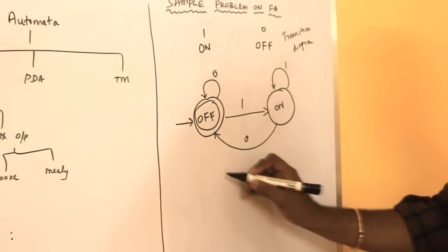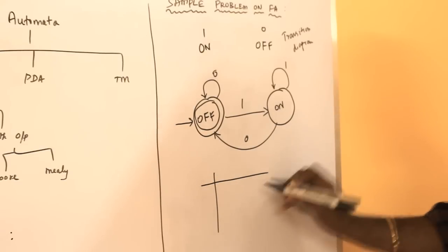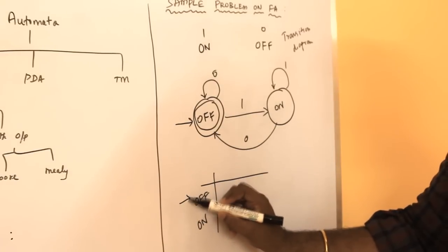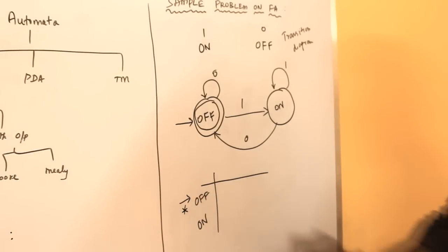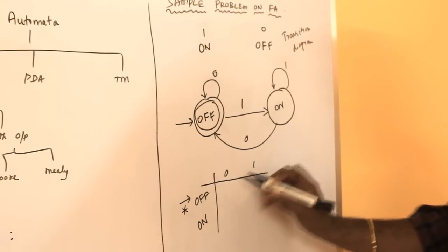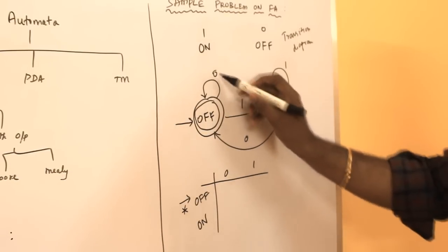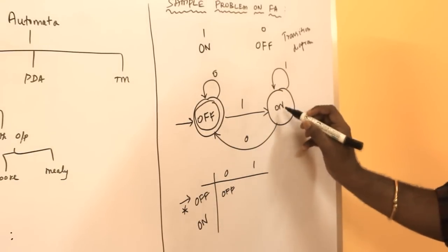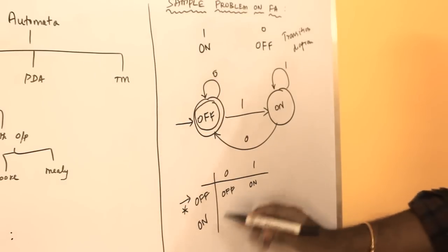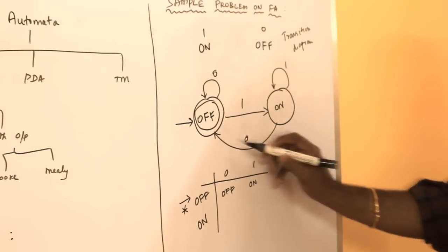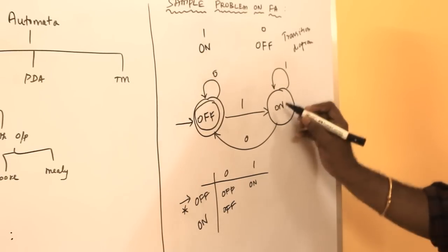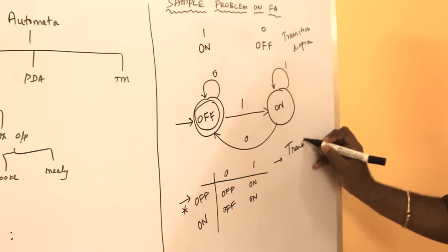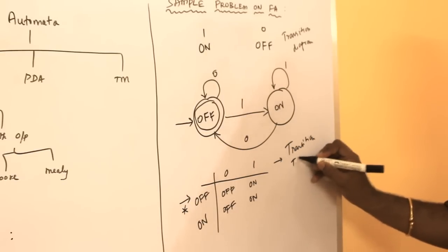Now the transition table. We have the initial state and the next state columns, with input symbols 0 and 1. Starting state Off with input 0 remains in Off state; with input 1 moves to On state. On state with input 1 remains in On state; with input 0 moves to Off state. This is the transition table.